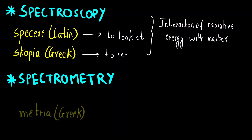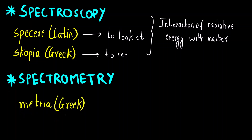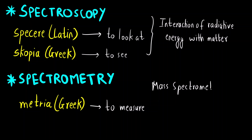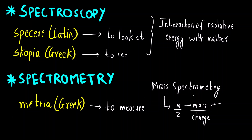Spectrometry, which we already saw in mass spectrometry, is derived from the Greek word 'metria' meaning 'to measure.' In mass spectrometry, we measured the m/z value — the mass-to-charge ratio — calculating the mass of different fragments of a particular molecule. Mass spectrometry, or spectrometry, is not a spectroscopic technique.